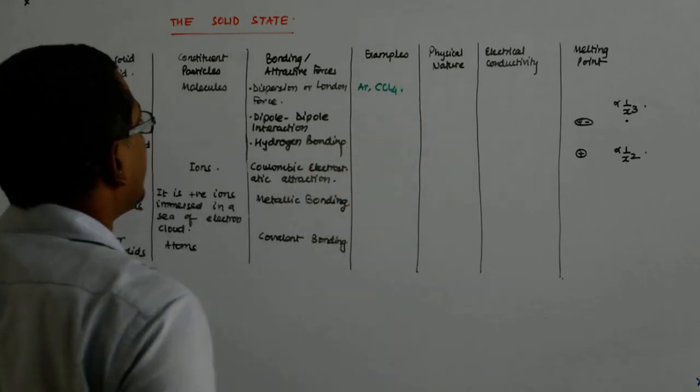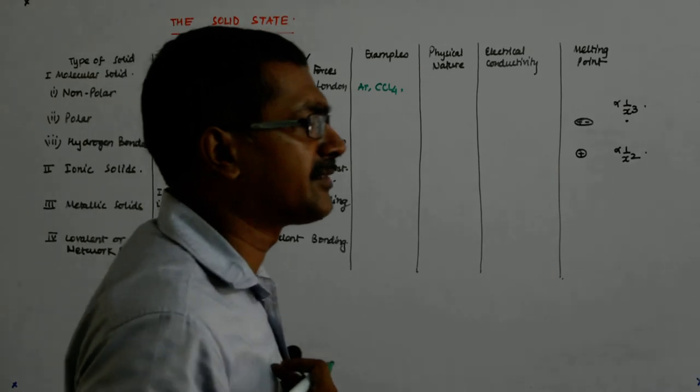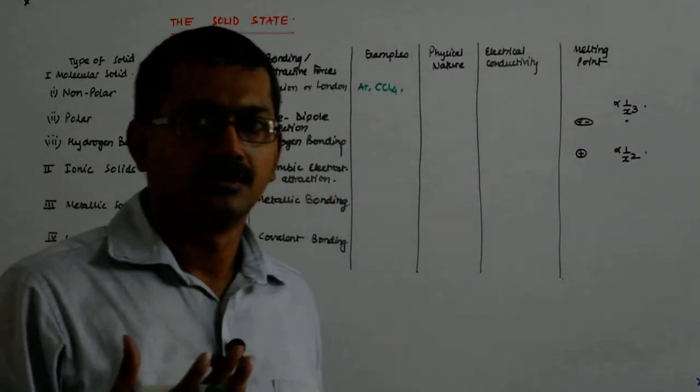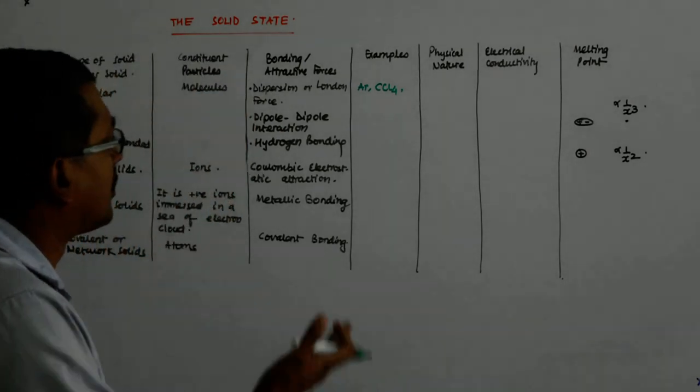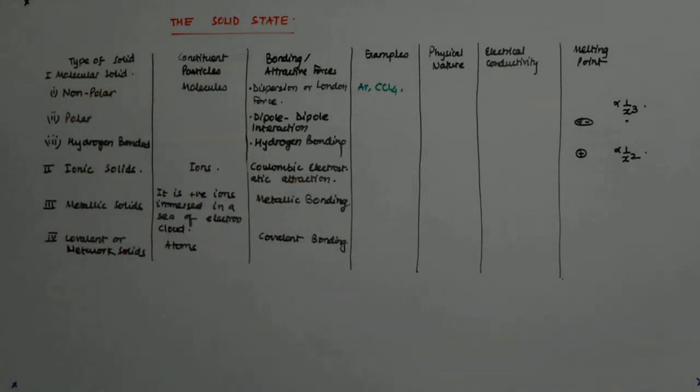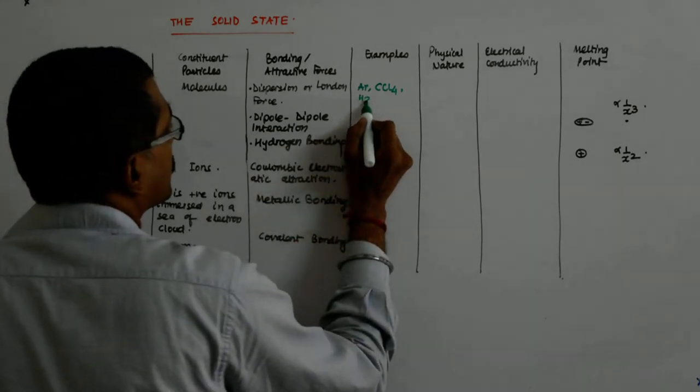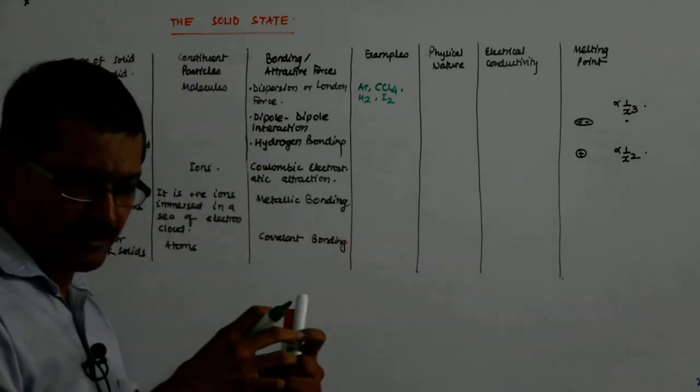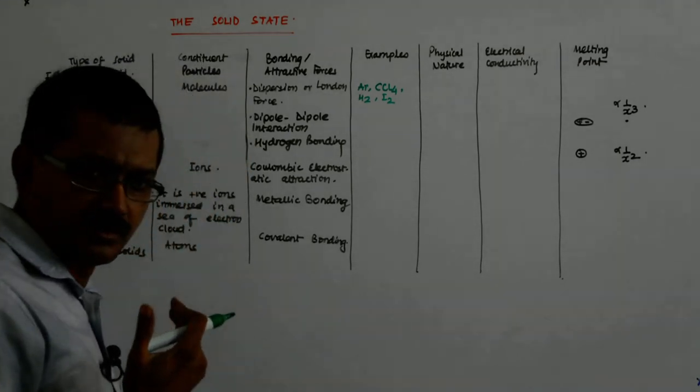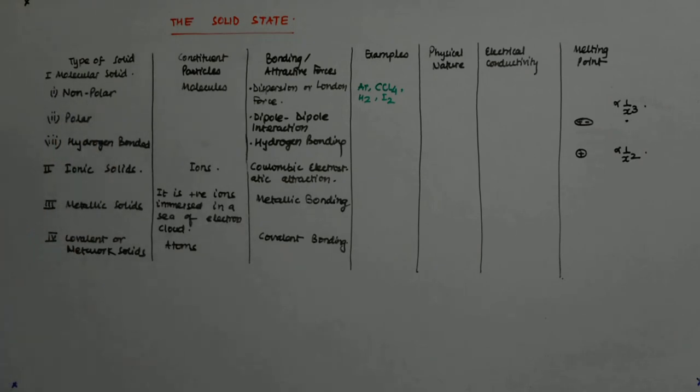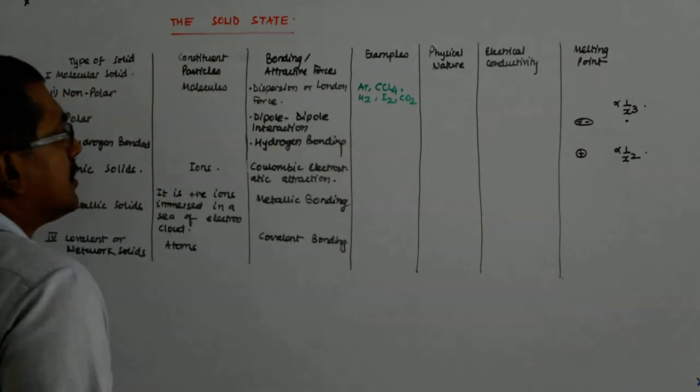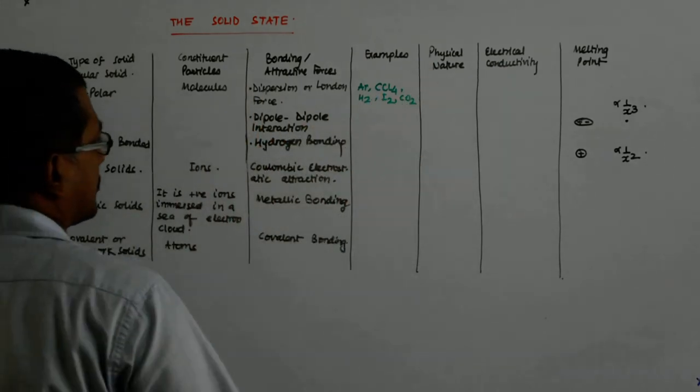So Argon, CCl4. CCl4 is also a non-polar thing. And many a times when we are doing our organic reactions, we will be using this as the medium when we need a non-polar, when we need an uncharged medium. Then we normally put CCl4. Then we have H2, I2, CO2. H2 is also non-polar. Why? For the simple reason that both are the same molecules. They have the same kind of pull on the electrons. None takes more, none gives more. So there is a perfect balance. CO2 is also one such. Though there is slight kind of dipole that does come into play.